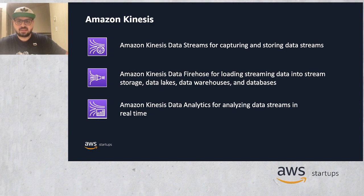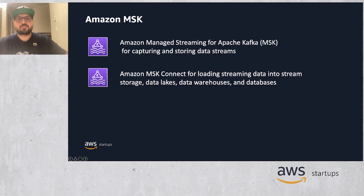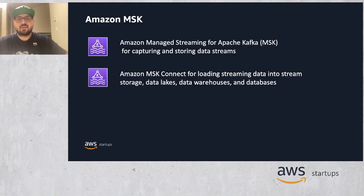Amazon Kinesis Data Analytics runs your Apache Flink applications continuously and scales automatically without managing servers. It processes data with sub-second latency from different data sources such as Kinesis Data Streams and Amazon MSK. Amazon MSK is a fully-managed Apache Kafka service for capturing and storing data streams. It eliminates the operational overhead of provisioning, configuring, and managing Kafka clusters. Amazon MSK Connect allows users to configure and deploy a connector using Kafka Connect with just a few clicks. Kafka Connect is an open-source component of Apache Kafka for connecting to external systems such as relational and non-relational databases, file streams, and more.